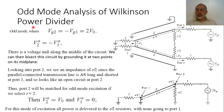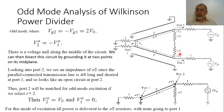For the odd mode analysis, we assume that port two is excited by a voltage source Vg2 equals two V-naught, and port three is excited by a voltage source of the same amplitude but out of phase, so it is minus two V-naught. With these two excitations, the voltage at port two has the same magnitude but is out of phase with respect to the voltage at port three.